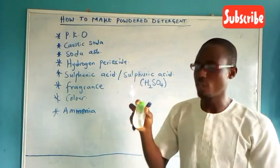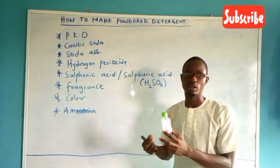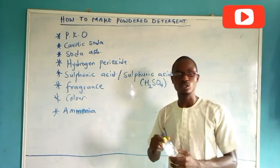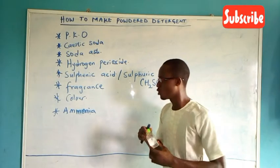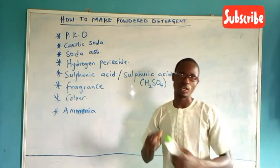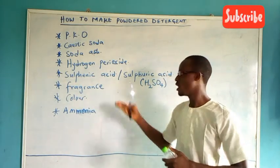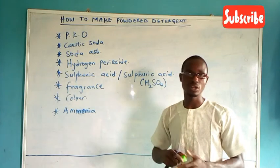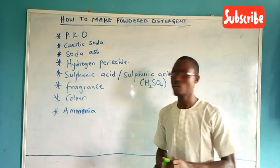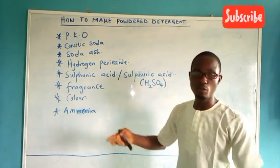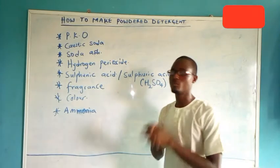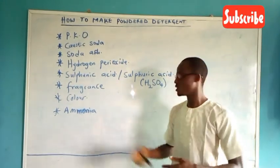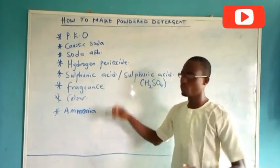The function of ammonia is to allow the detergent to break into powder properly. Color gives the detergent its characteristic color. The fragrance is to give it a nice, good fragrance. Sulfonic acid is a foaming agent — if we have enough of this, the soap will foam very well.